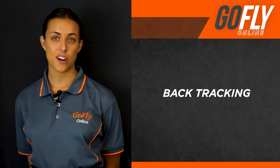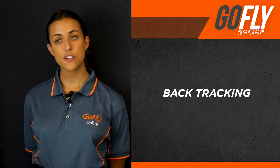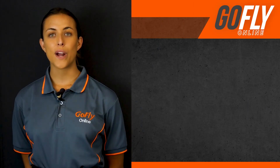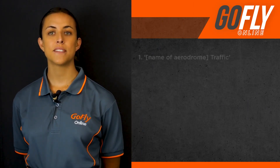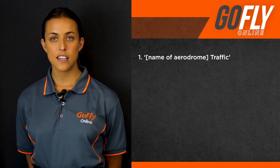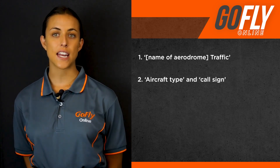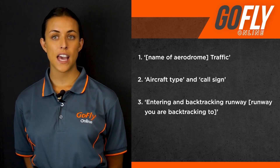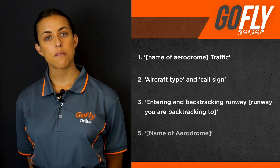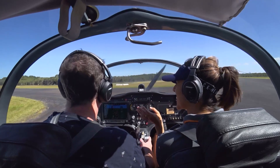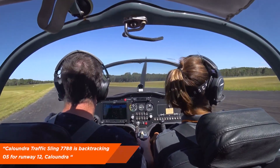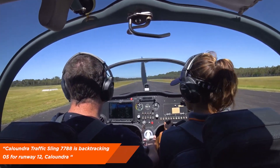Backtracking. Sometimes your aerodrome has two runways. Here at Caloundra we have two runways and no taxiway, so depending on the wind, sometimes you will need to backtrack on a runway to get to another. Let's assume the wind is favouring runway 12 — I would then need to backtrack on runway 05. When entering and backtracking on a runway, you must state the name of the aerodrome, followed by traffic, aircraft type and call sign, entering and backtracking runway, the runway you are backtracking to, and the name of the aerodrome. An example would be: Caloundra traffic, Sling 7788, backtracking runway 05 for runway 12, Caloundra.